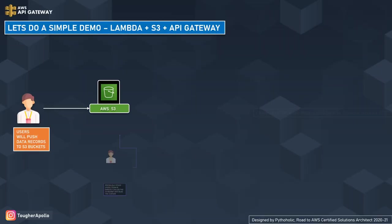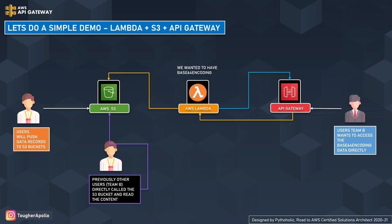Before moving forward to the AWS console, let's understand the requirements. Initially, our users at team A were uploading files to an AWS S3 bucket and the users at team B used to download or use them directly from the bucket. Post which, there was a requirement that all the data that users are going to download should be base64 encoded. So we introduced a simple Lambda function and an API endpoint resource so that users can pull the data they need.